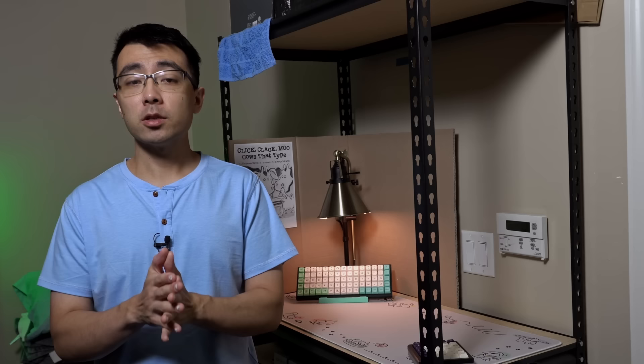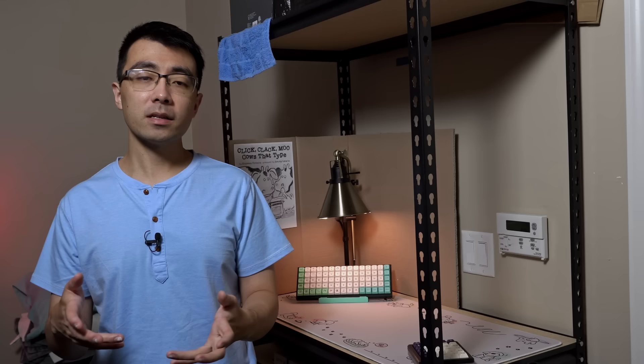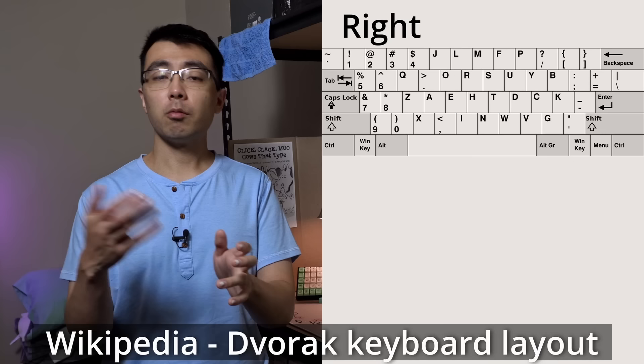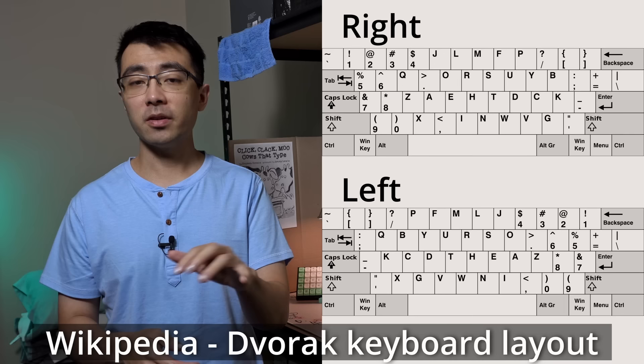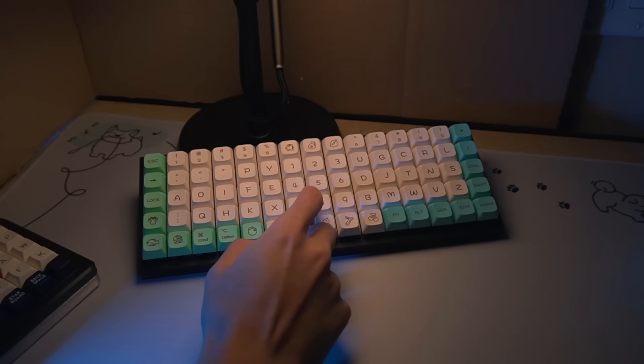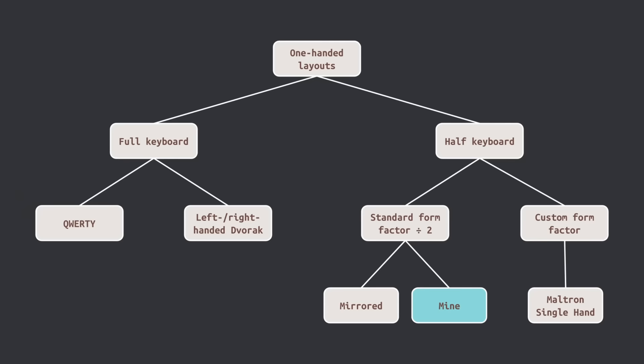But before discussing my design, it is worth mentioning why I'm not just learning an existing one-handed layout. Besides wanting to test my tool, of course. In fact, if you're interested in the topic, one of these pre-existing solutions may suit you better. The first category of layouts is those using a full keyboard. Of course, you could simply use QWERTY with one hand, which would be the easiest to learn, but there are also right and left-handed Dvorak variants. My main issue trying these is that I do not find reaching and hand movement very comfortable, and it's worse for me since I've recently been using keyboards with stuff in the middle, like a trackball or a numpad. So, these are out of the question.